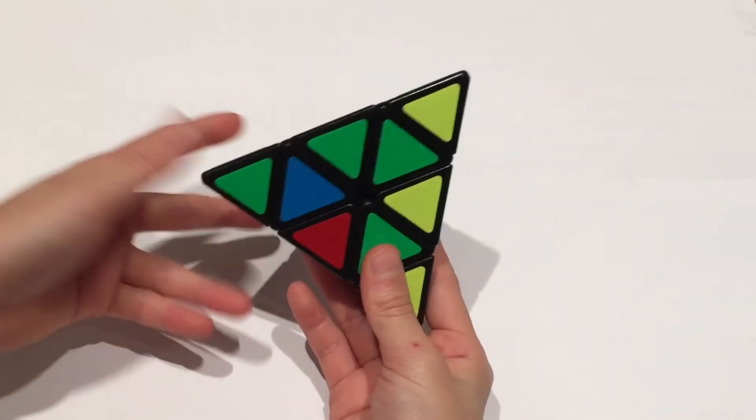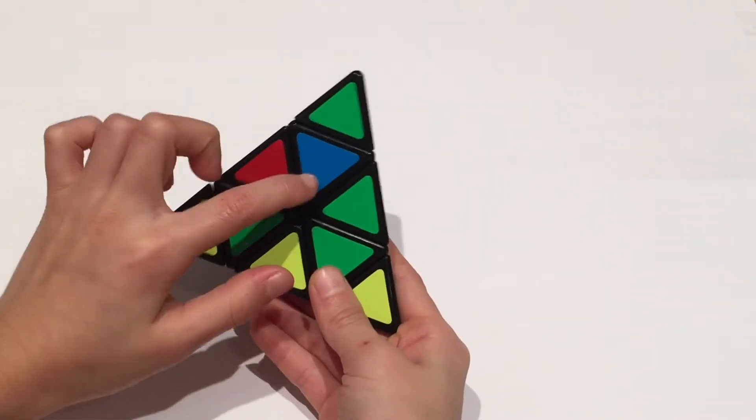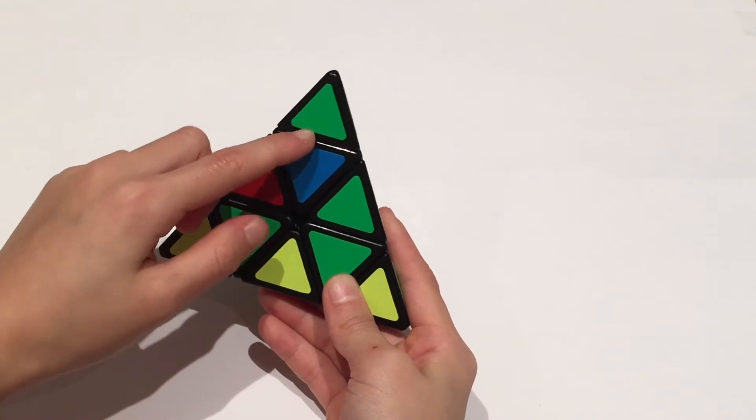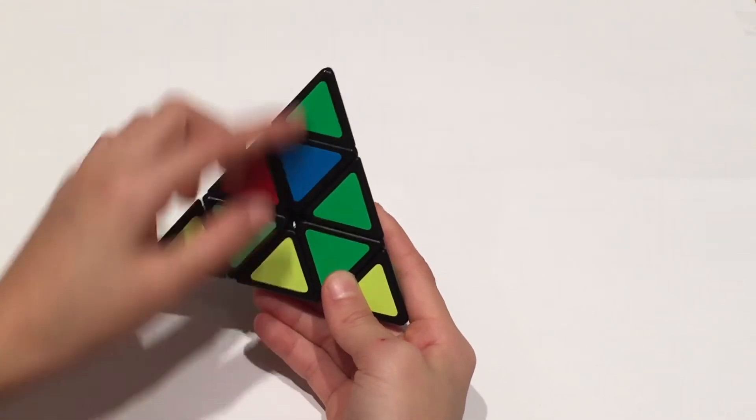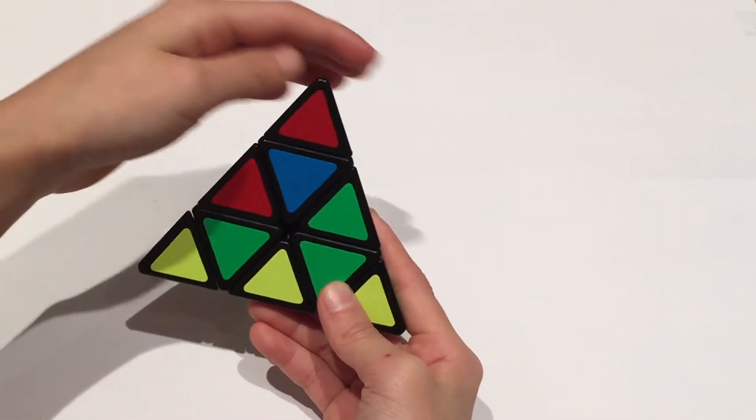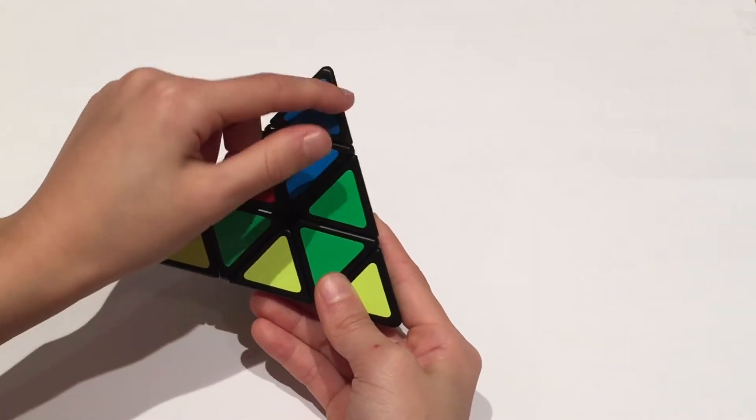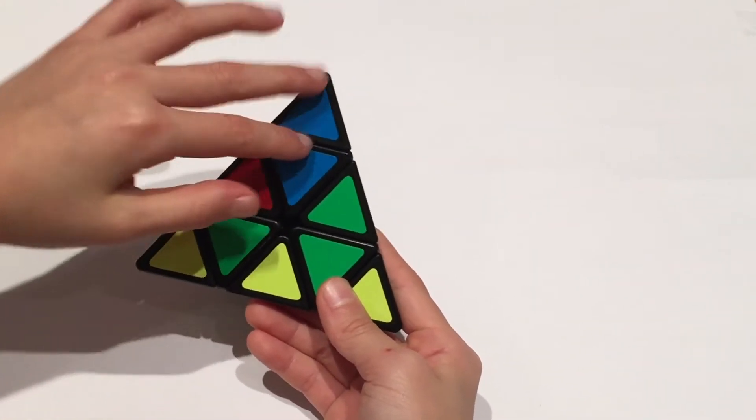So I'm choosing blue to make for my one layer. So here's a center with blue. And now I'm going to find its matching tip which would be this one that also has blue on it. This one has green. This one has red. And there you go, this one has blue. So that's one pair. I'm going to call these pairs.